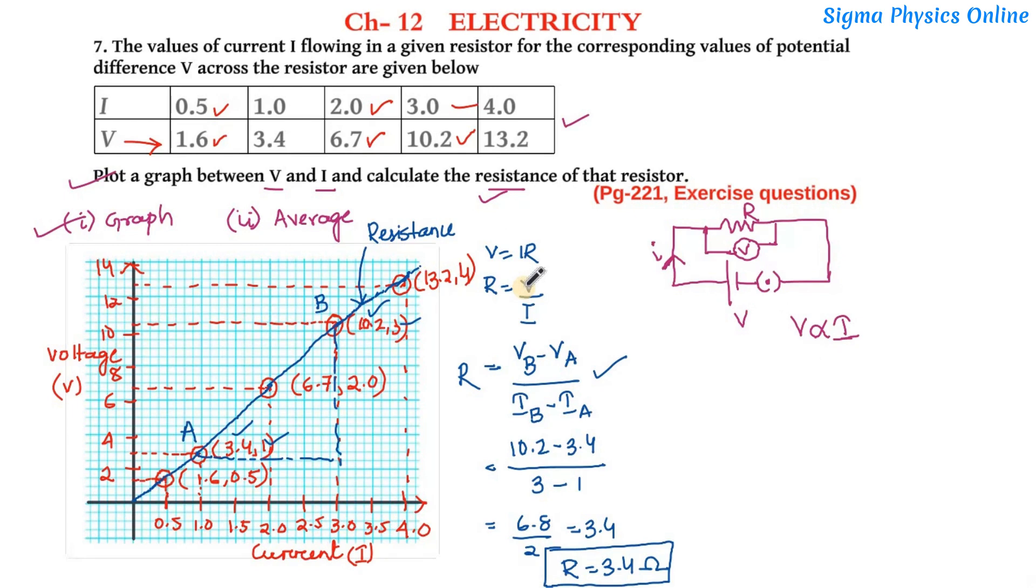Now this is a graphical method. There is another method to find out the resistance of this wire, that is by using the average method using this table. Let's note down the table first.